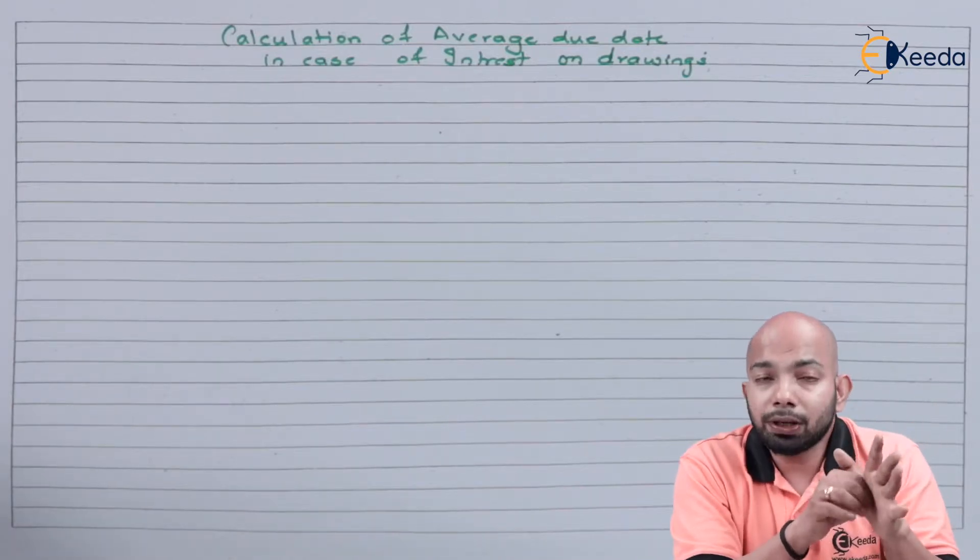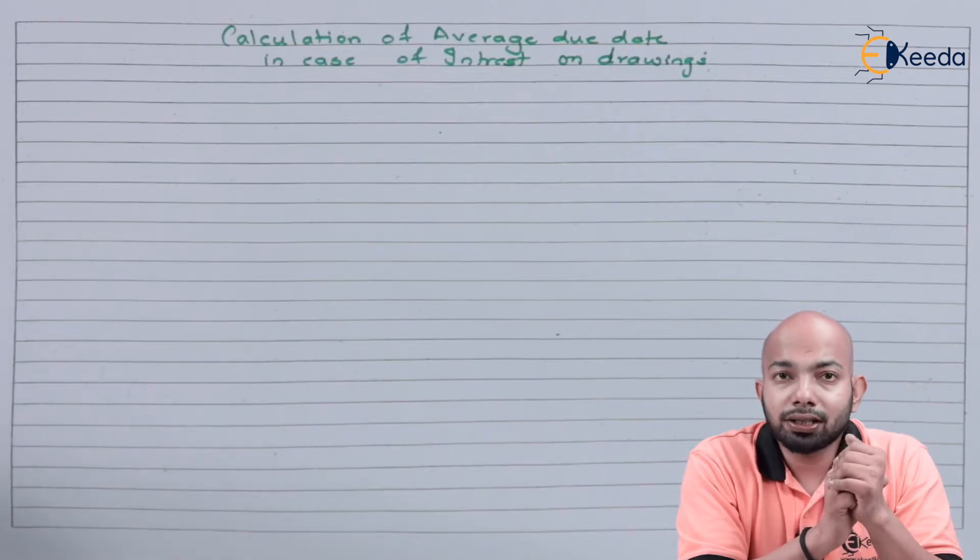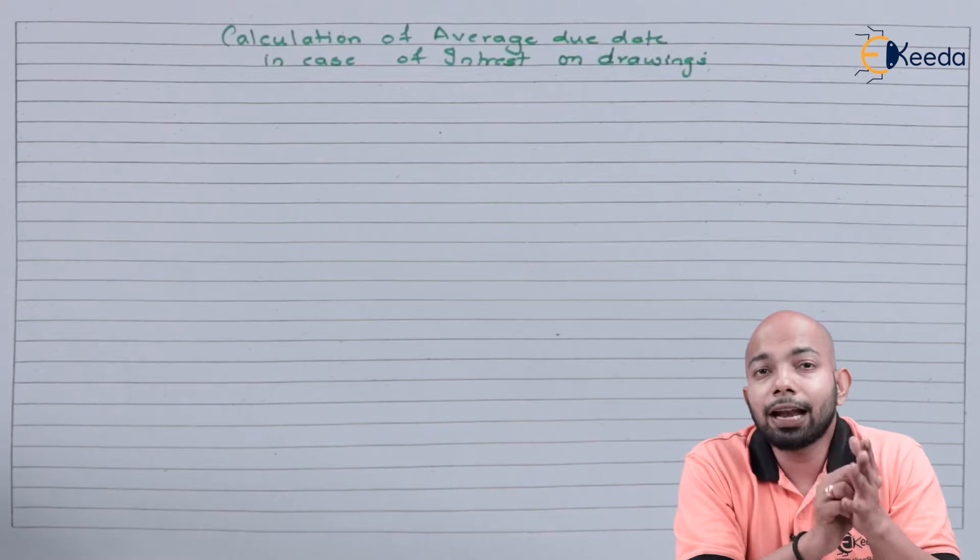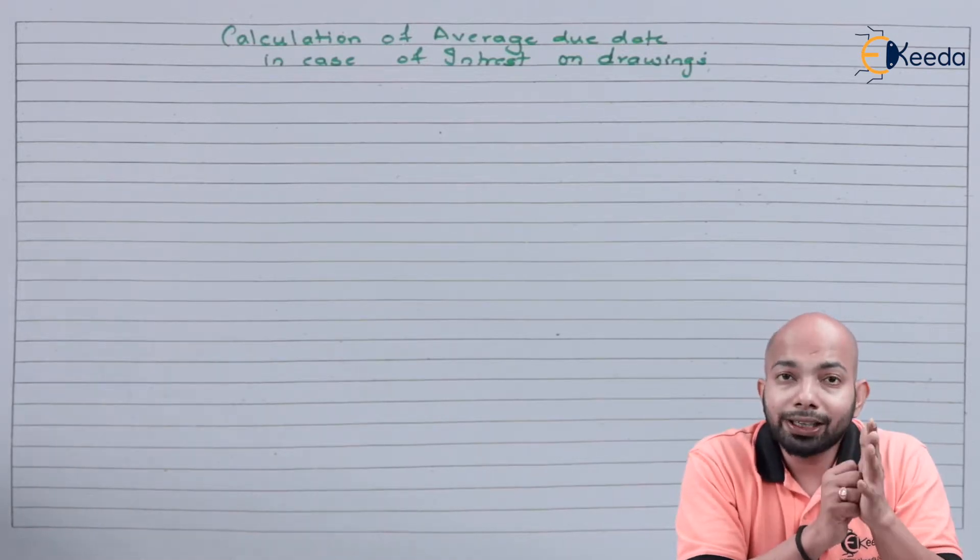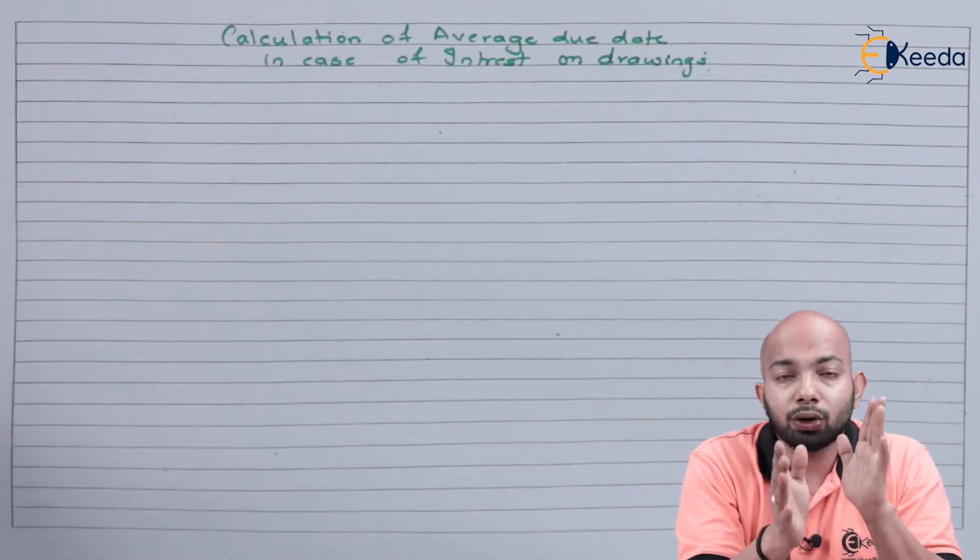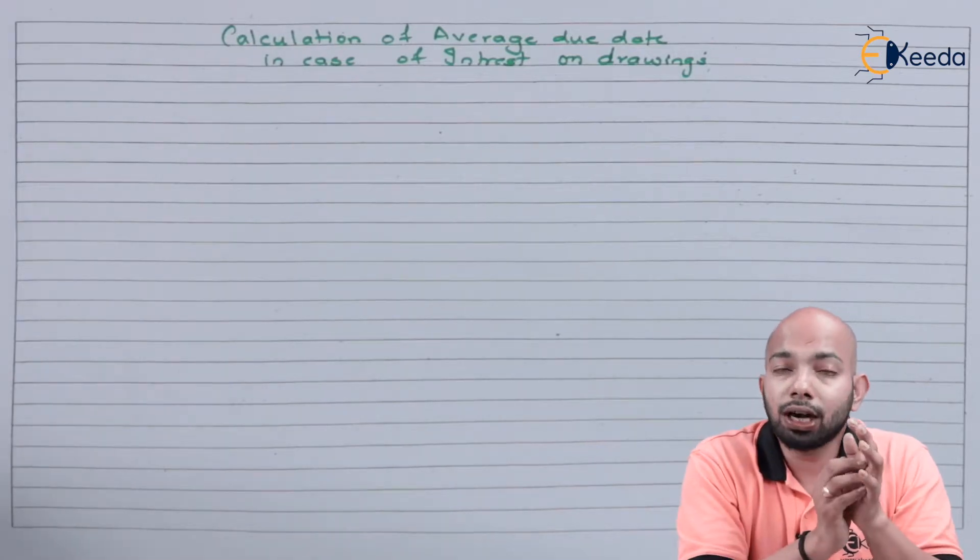Just like the way we did it in the previous video whereby interest was calculated on repayments, the same thing can be done here. Average due date concept can be utilized to figure out the average due date where the payment can be made and the interest will be charged only until that time frame, because that will be the break-even point. So how do we do that is something we'll understand now.